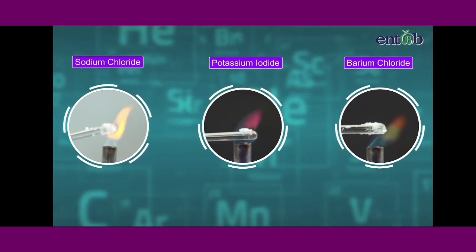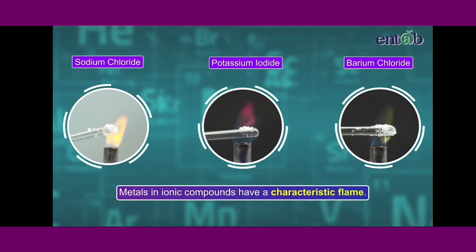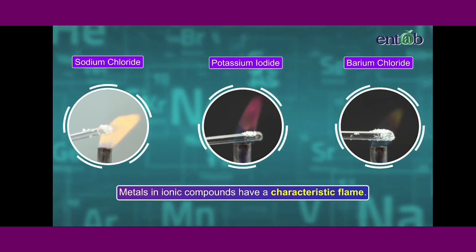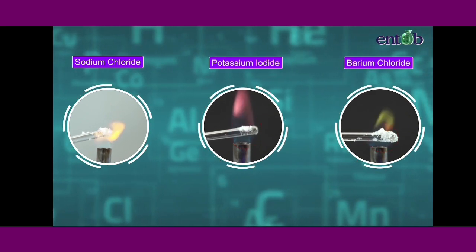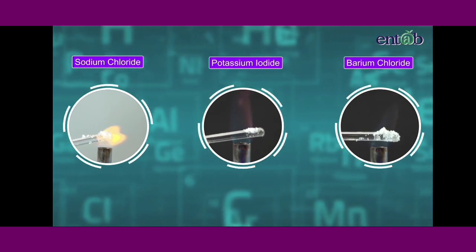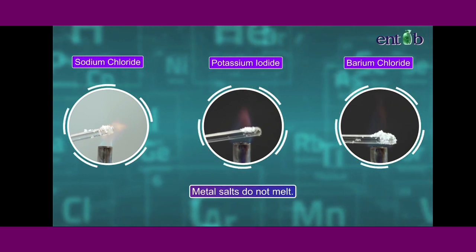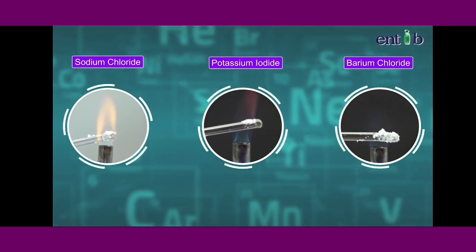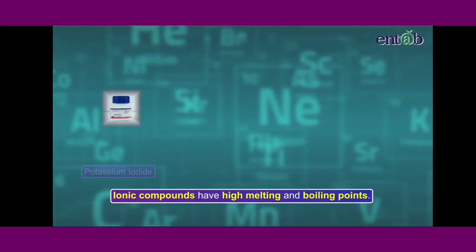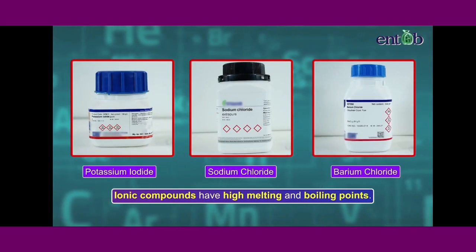We now realize that metal ions of ionic compounds give a characteristic flame. In both cases, we again observe that the metal salts do not melt. It leads us to the conclusion that ionic compounds have high melting and boiling points.